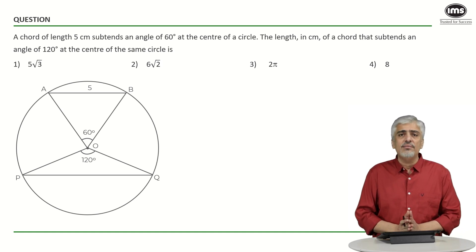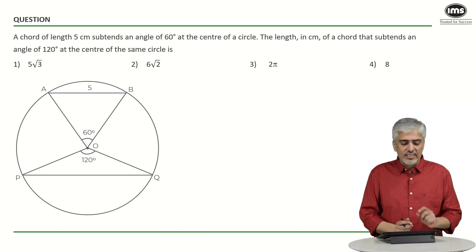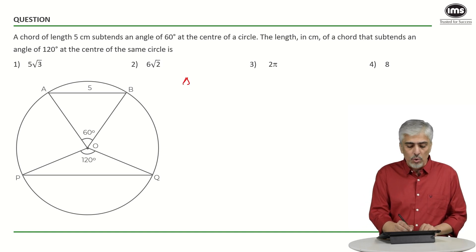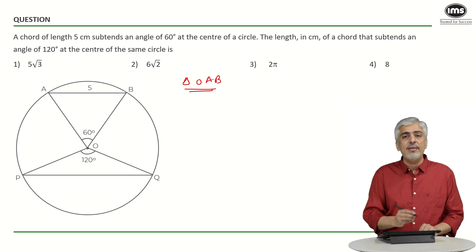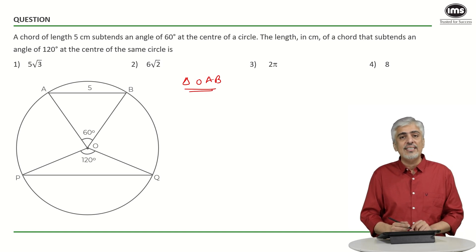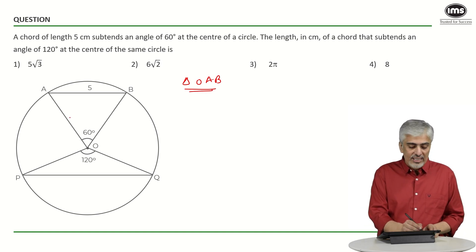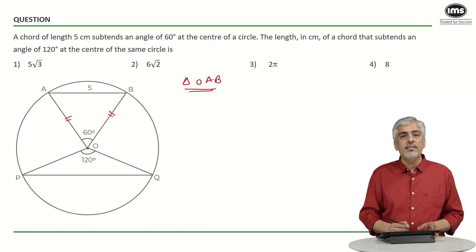Let's look at it. Basic properties are there. Now, let's start with triangle OAB. If you notice in triangle OAB, the angle of the vertex is 60 degrees. These two sides are equal because they are the radius of the circle. Now, if two sides are equal, two angles also become equal.